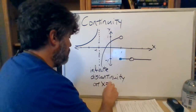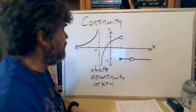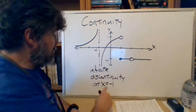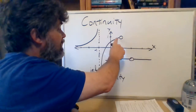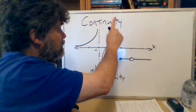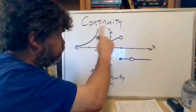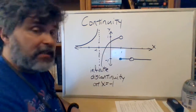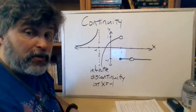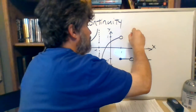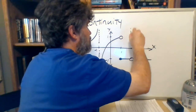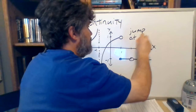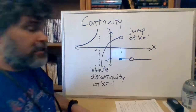So that's at x equals negative 1. The next one we run into: here I am tracing along with my little finger, and the whole graph just switches y values. That's called a jump discontinuity — a jump discontinuity at x equals 1 in this case.